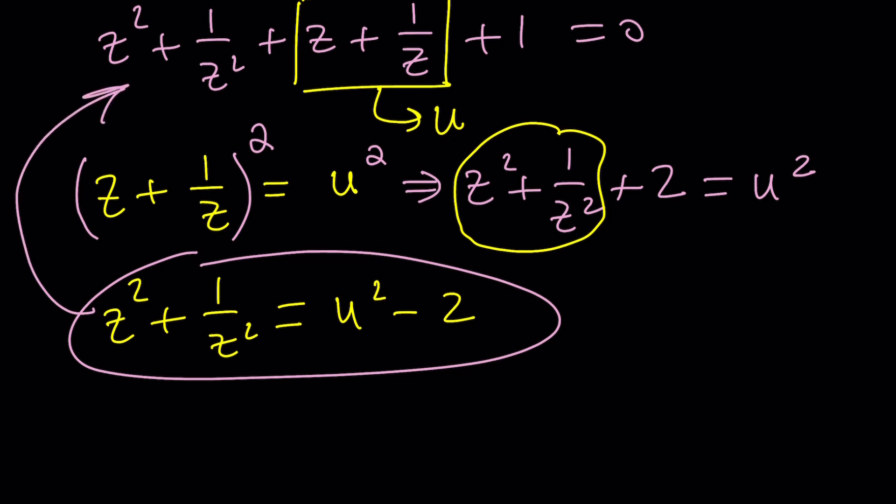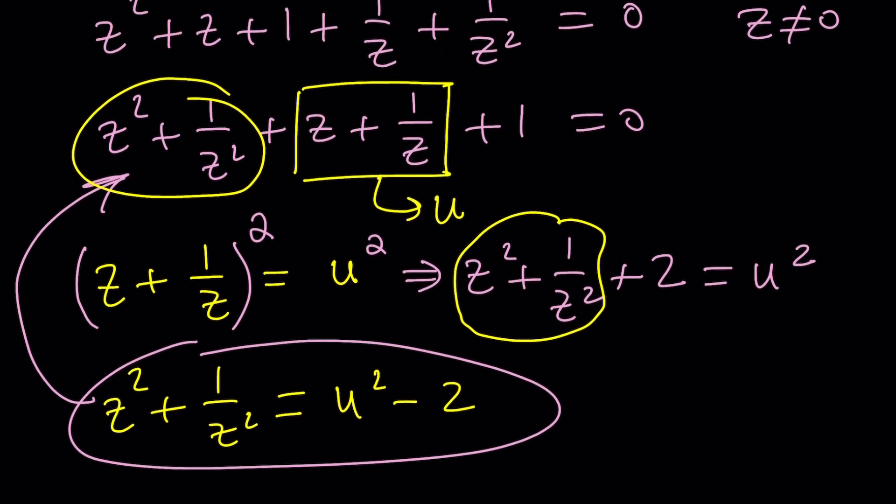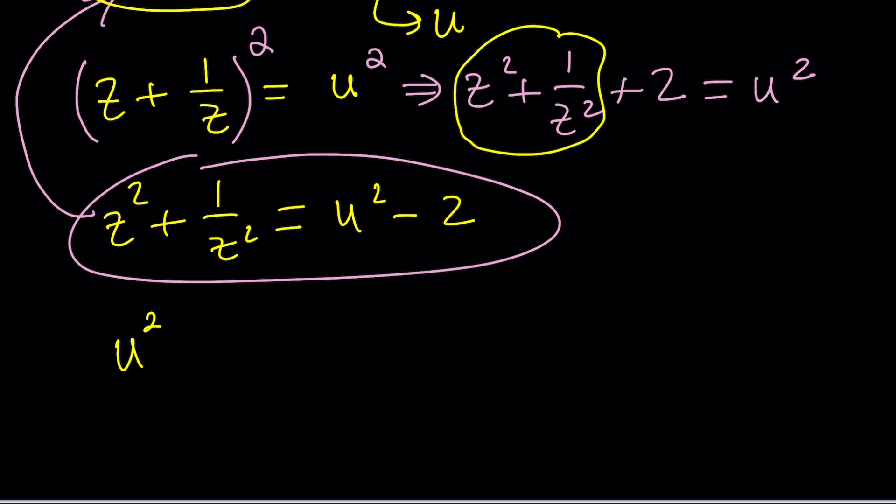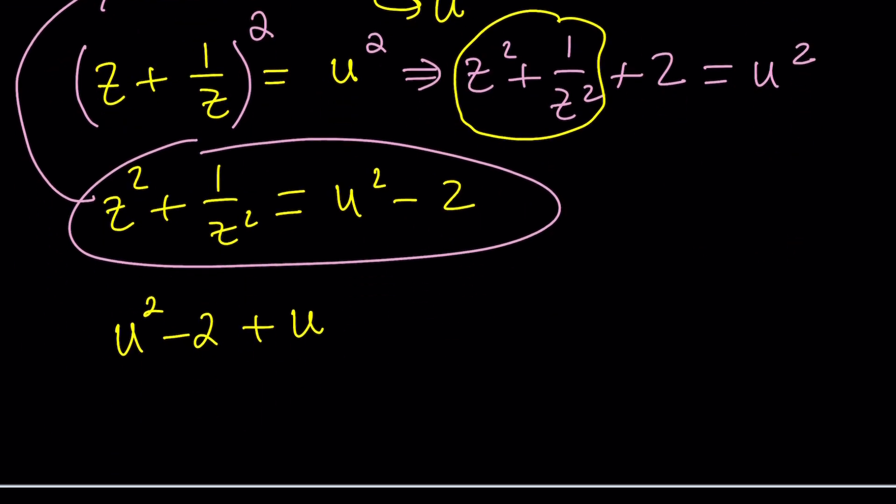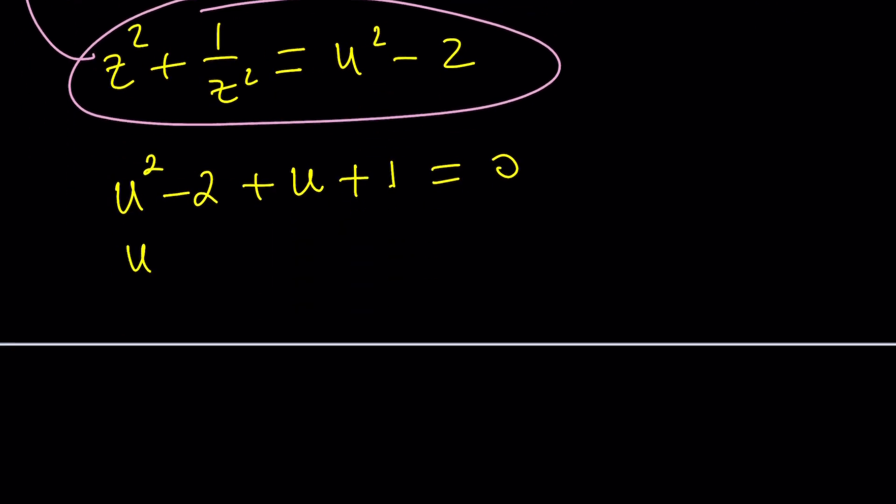Because if you call z plus one over z equals u and square both sides, we get z squared plus one over z squared plus two equals u squared. Since we're looking for the sum of two squares, we can isolate it and write z squared plus one over z squared as u squared minus two.